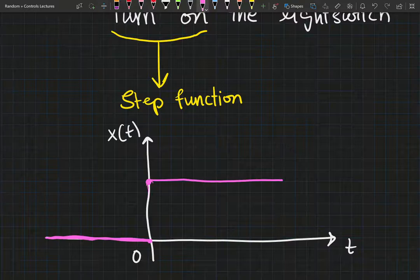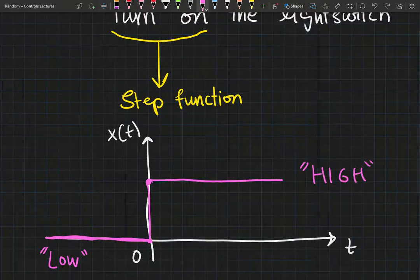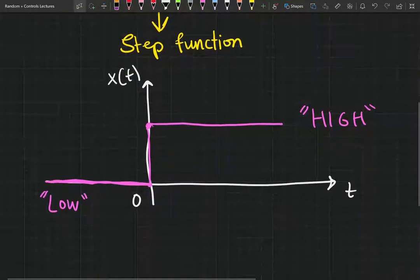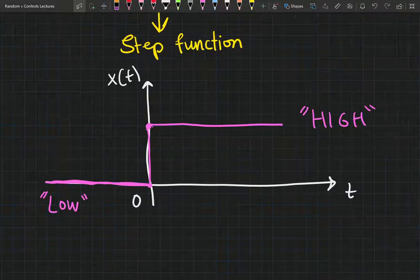So it goes from a low to a high. This is a very basic terminology used in signals processing, nothing fancy. So you're going from a low to a high.